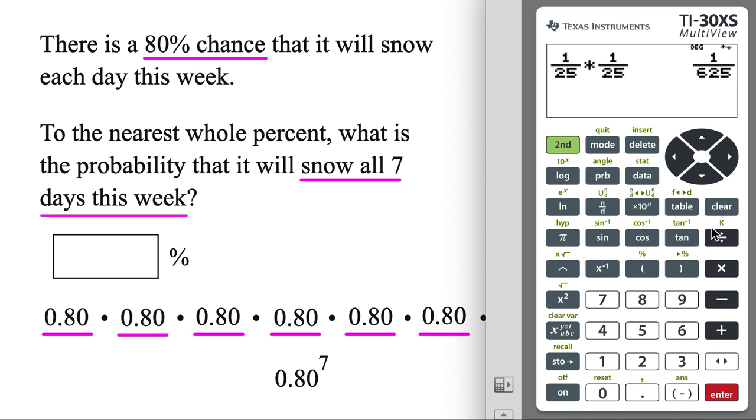So let's go ahead and do that. 0.80. Then we're going to use this up arrow to the power of 7. And boom. So final answer, we're going to move this decimal two places over, turn it into a percent. So 20.97%.